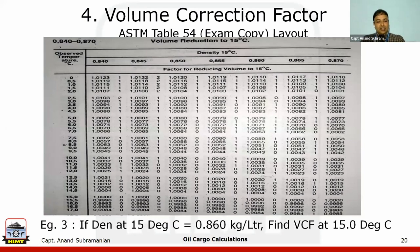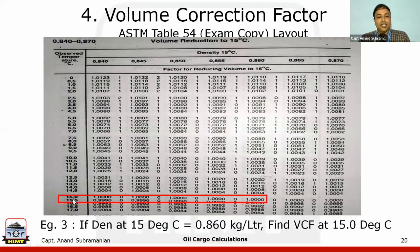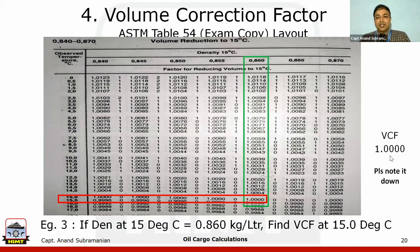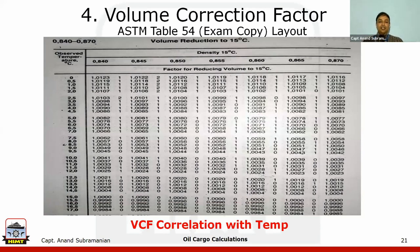The third example: if density at 15 degrees Celsius is 0.860 and observed temperature is also 15 degrees Celsius, the VCF is 1. The ambient temperature and the standard temperature are the same, so there is no change in volume — that is why at 15 degrees all numbers in the table are 1. There's an important correlation: if temperature is less than 15 degrees, the VCF is always more than 1. If temperature equals 15 degrees, VCF is exactly 1. If temperature is more than 15 degrees, VCF is always less than 1.